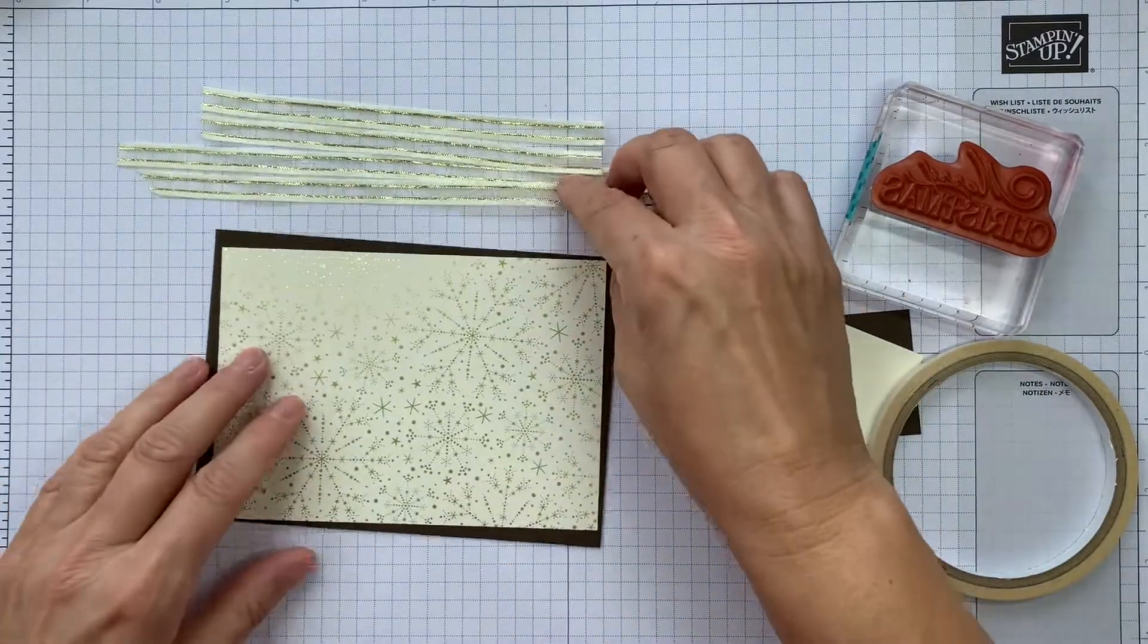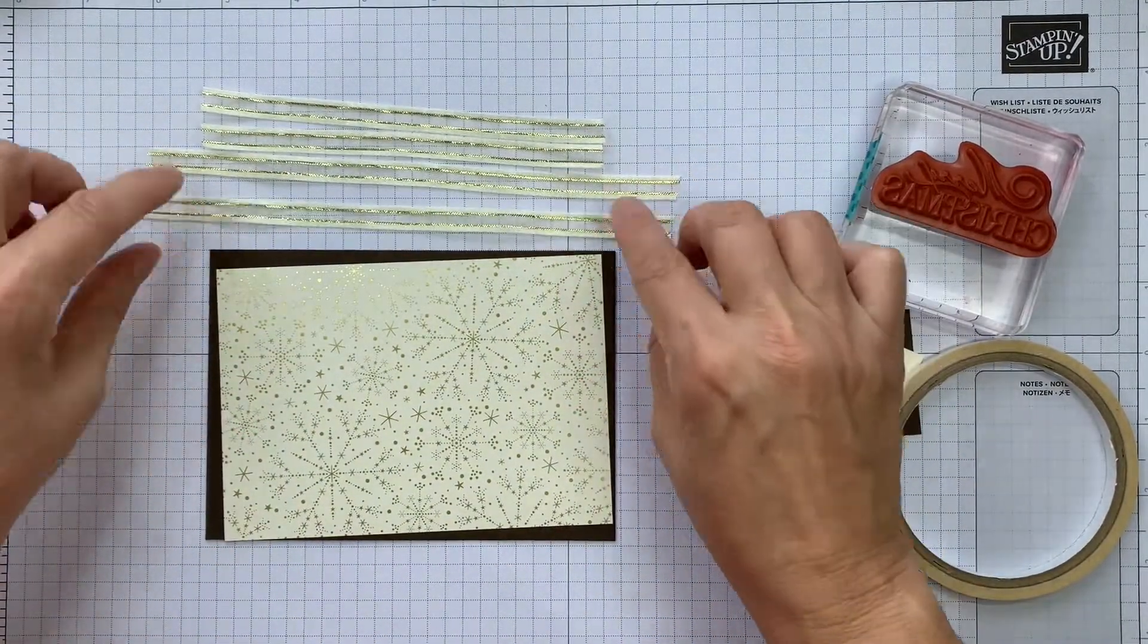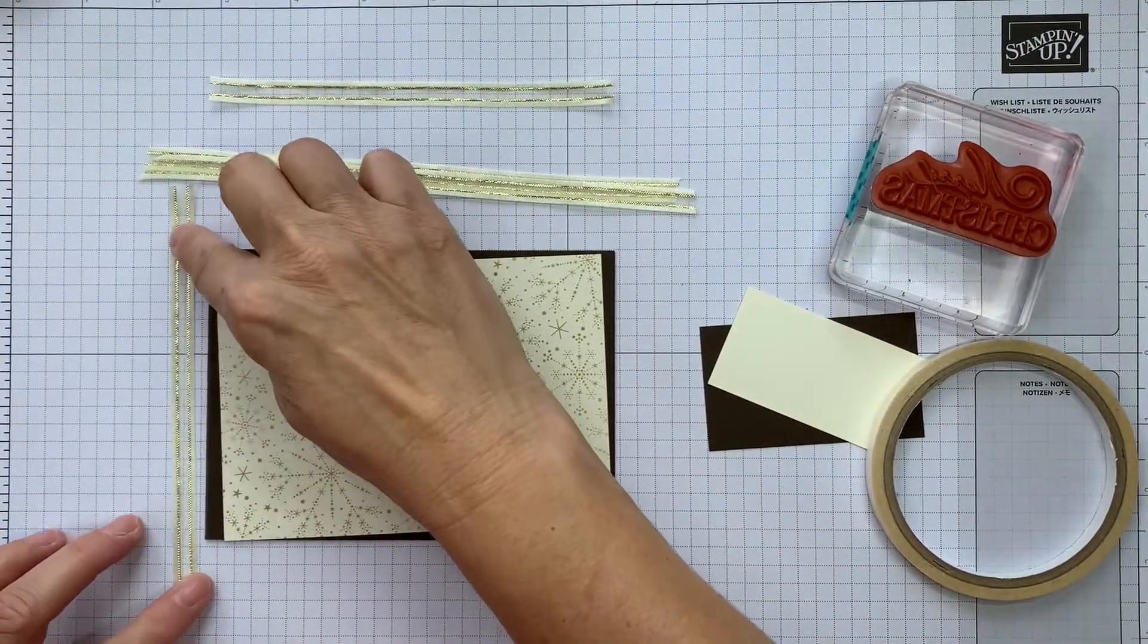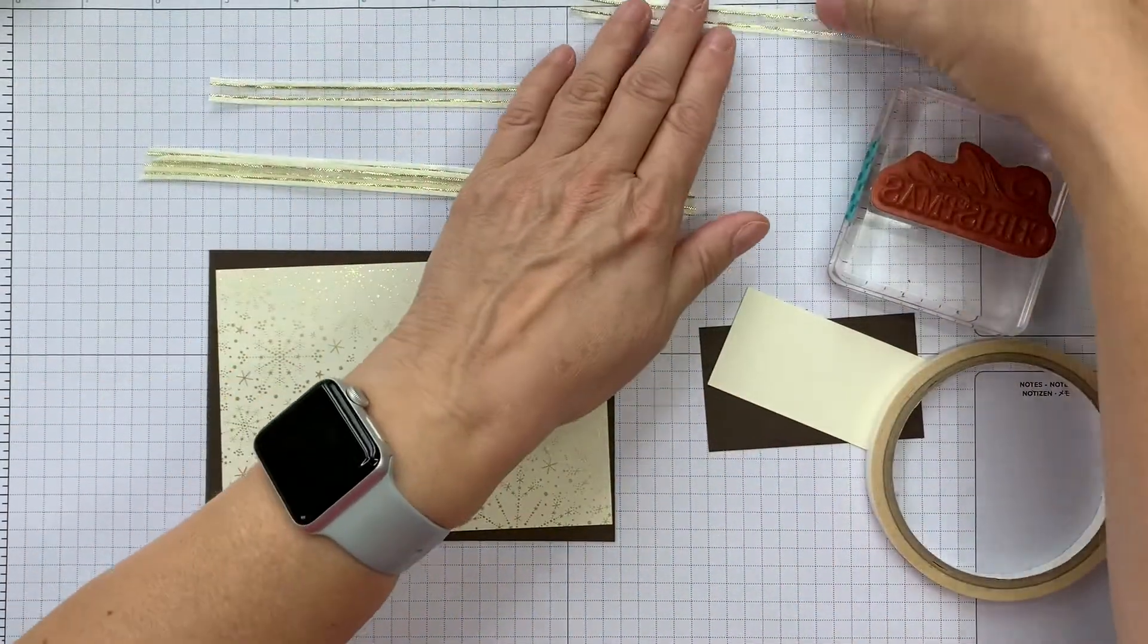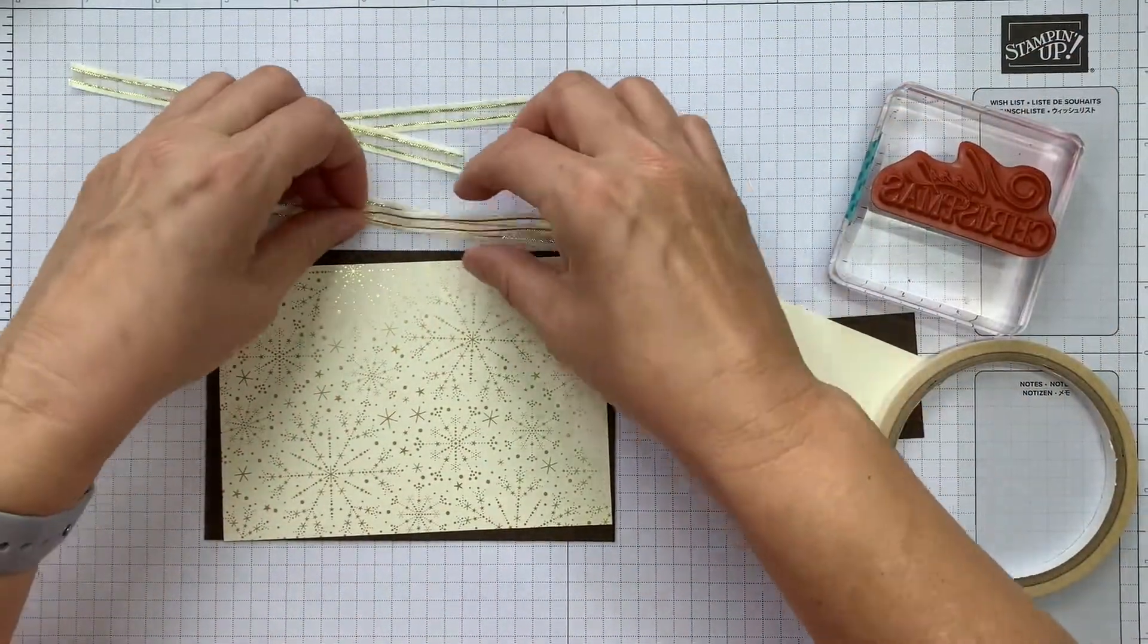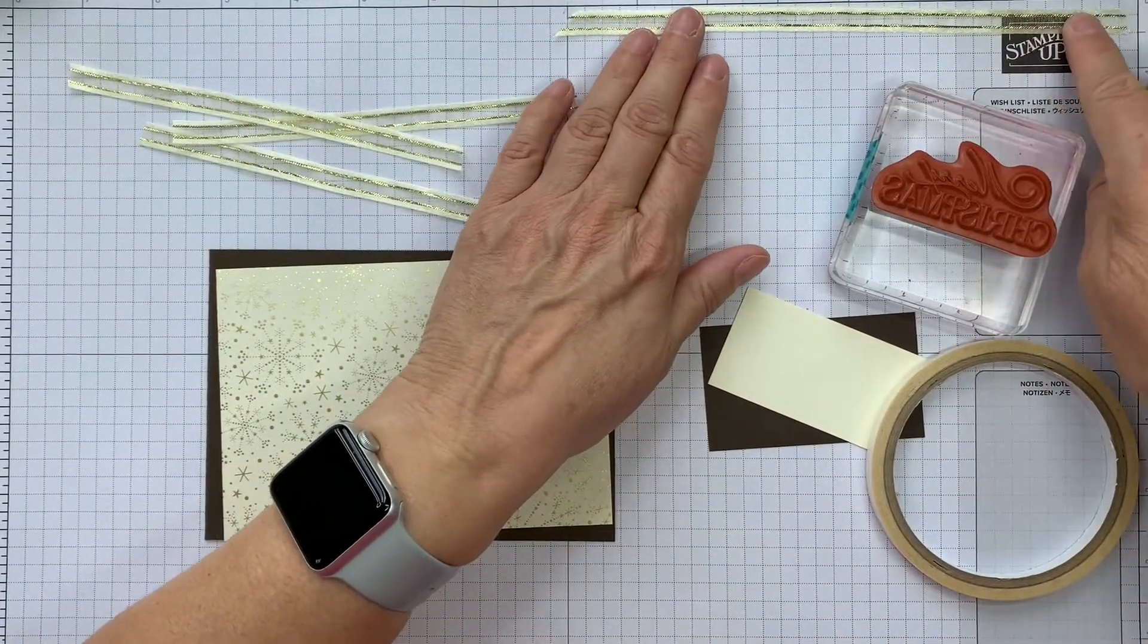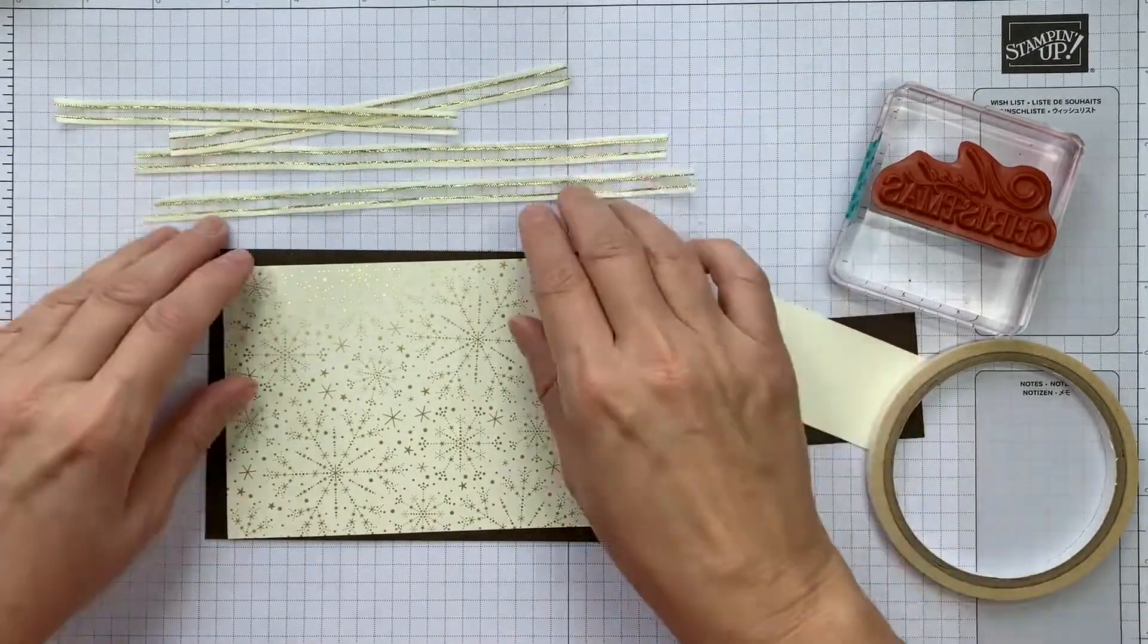And I've just cut some pieces of ribbon, two that are a bit longer than the length and two that are a bit longer than the height. And I've not actually measured these. I can tell you that the shorter one is six inches approximately. It's just under six inches. And the longer one is about eight inches.